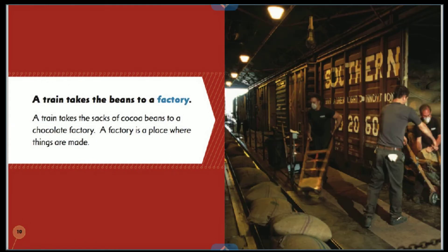A train takes the sacks of cocoa beans to a chocolate factory. A factory is a place where things are made.